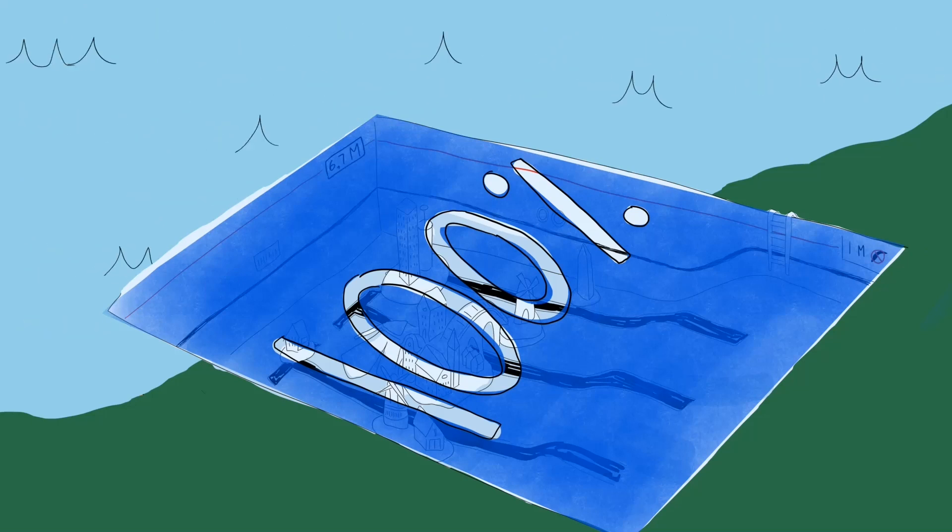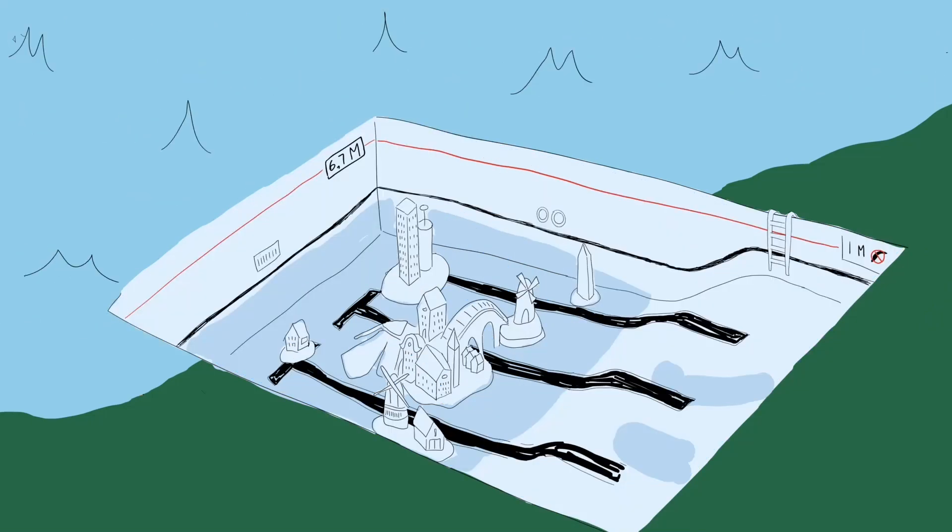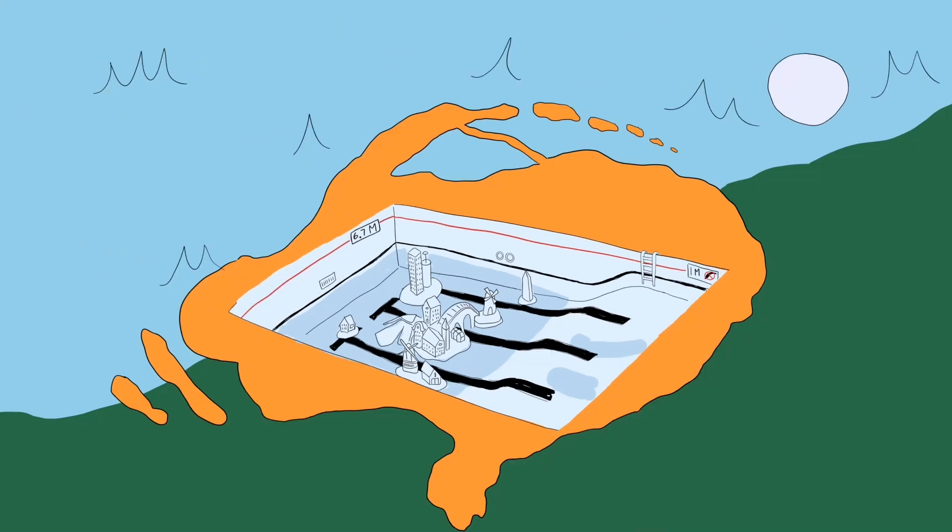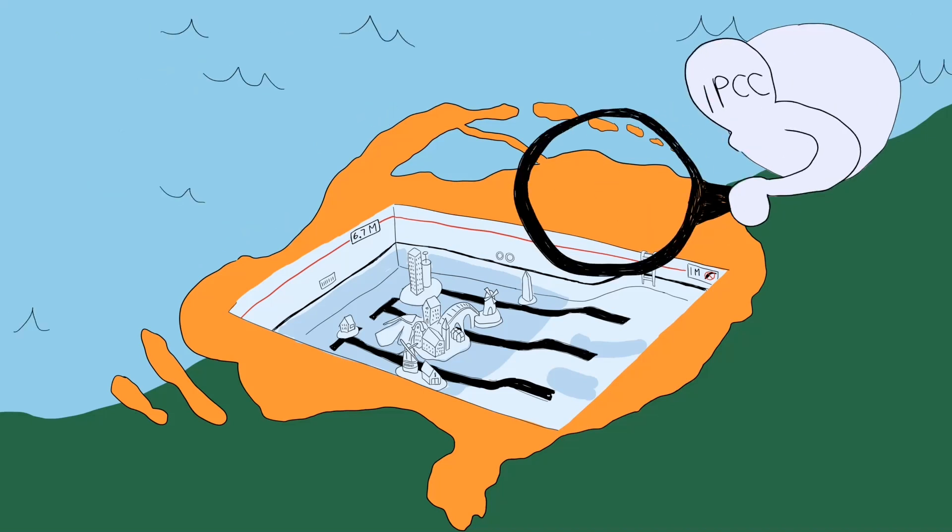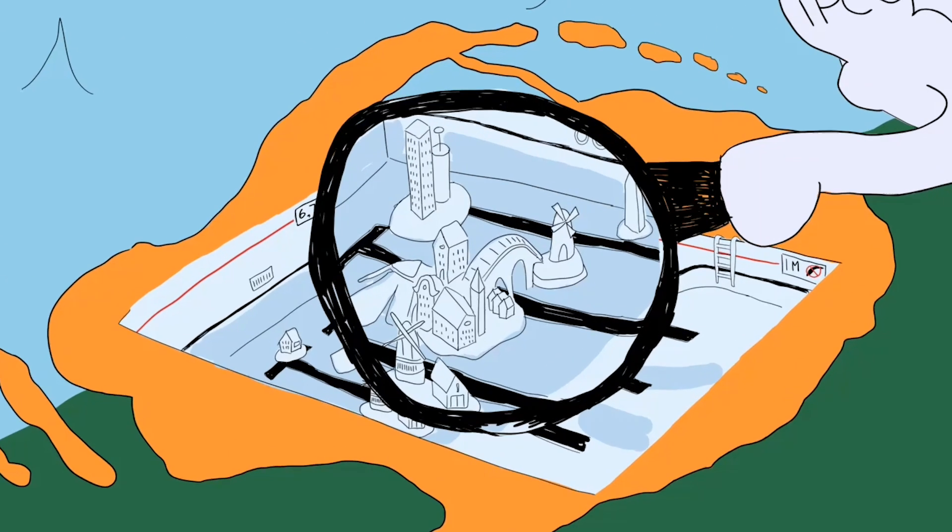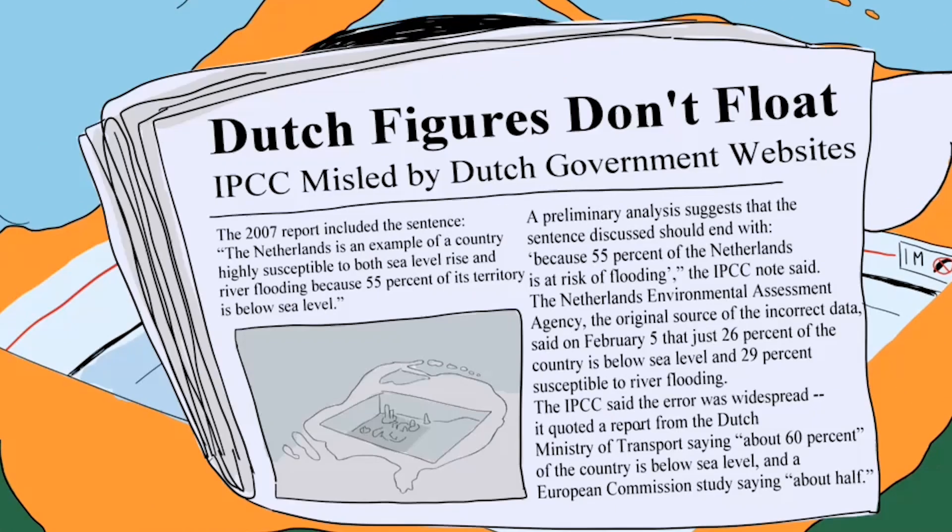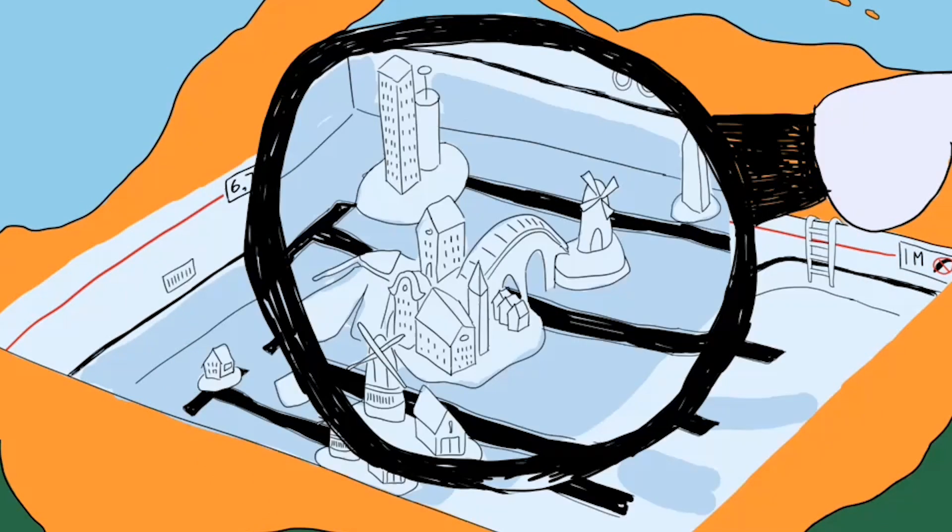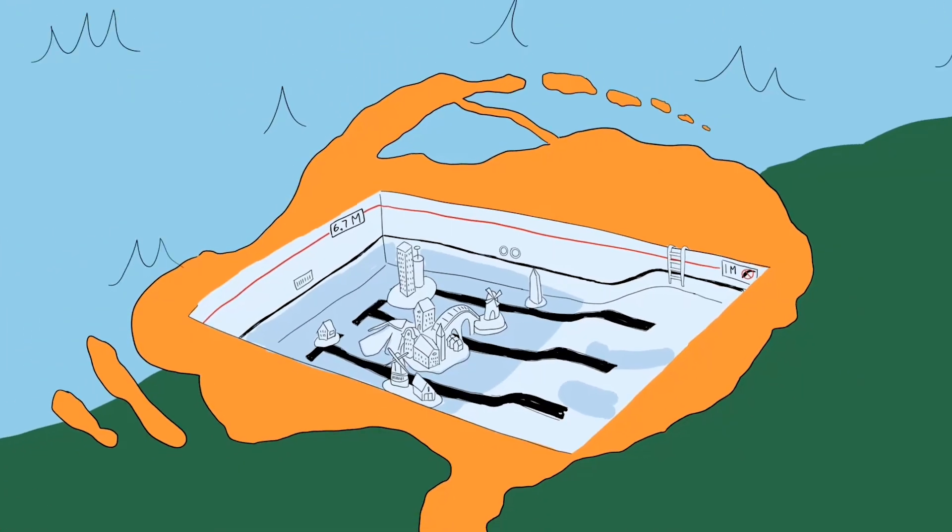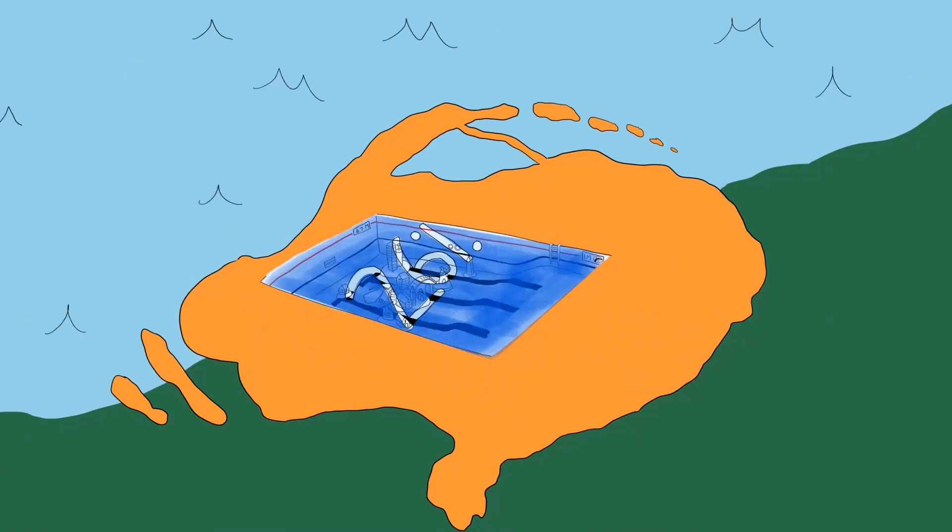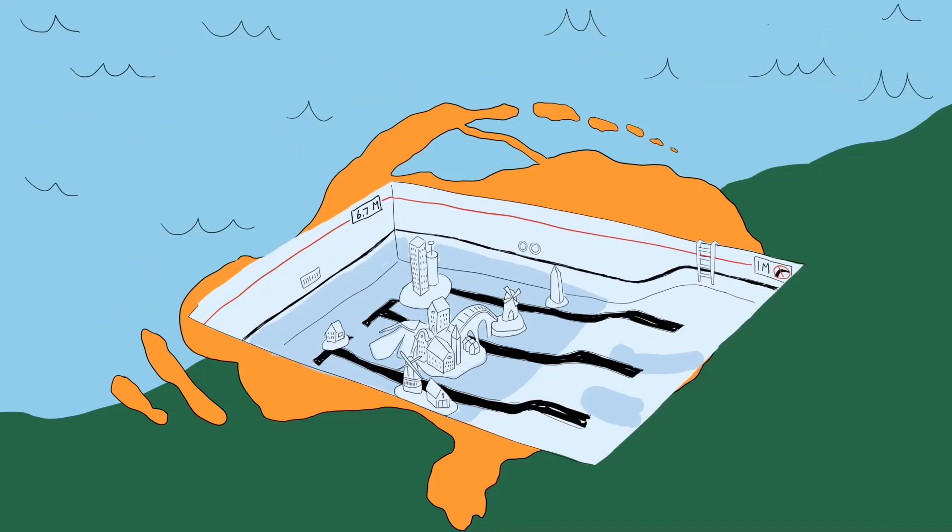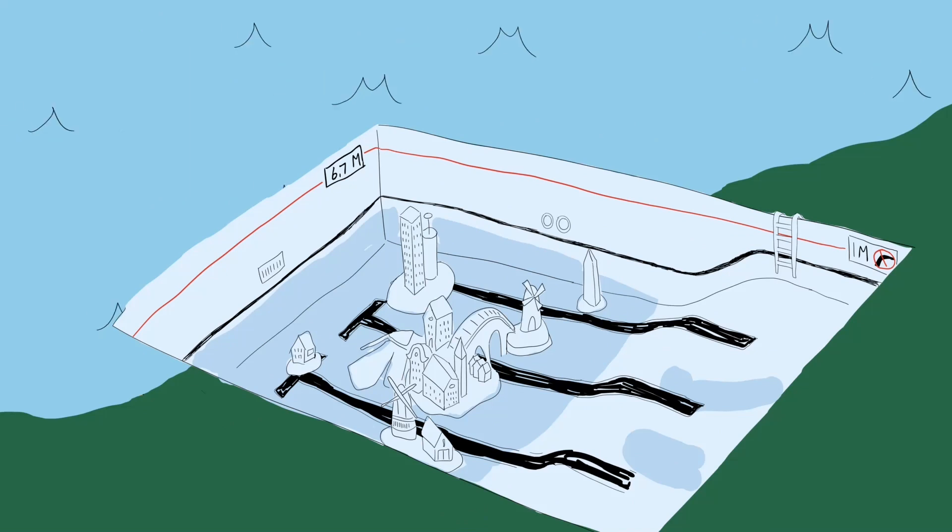Is the whole country like a drained swimming pool? Well, someone challenged the IPCC on their claim of 55%. And the IPCC said, okay, we'll look into it. And they located their source. Guess what? It was the Dutch government. Their own environmental assessment agency. Oops. So how big is the Dutch swimming pool really? It's 26% of the country. That's it. Still a lot, but not half or three quarters or almost the whole country.